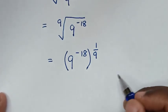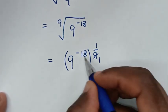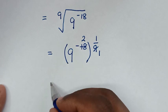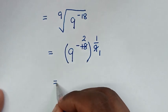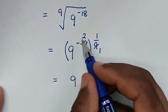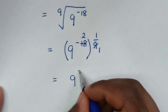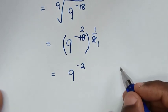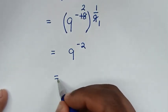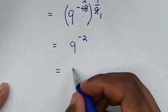Now to simplify, this 9 will cancel — 1 and 2 — so it will be equal to 9 power of negative 2 times 1, which is power of negative 2. So 9 power of negative 2.